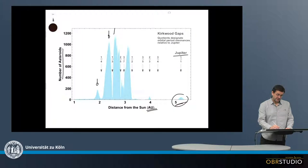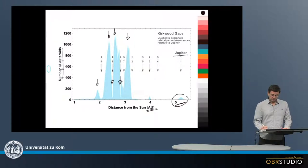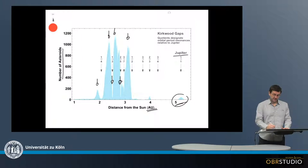There are a number of larger peaks and smaller ones in between, and then importantly there are these gaps. Now these gaps are not at some random distances from the Sun but at what we call resonances.